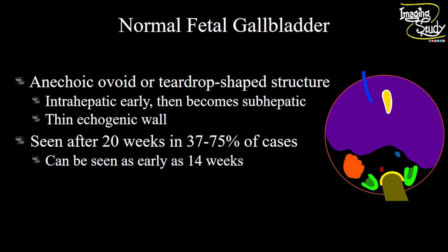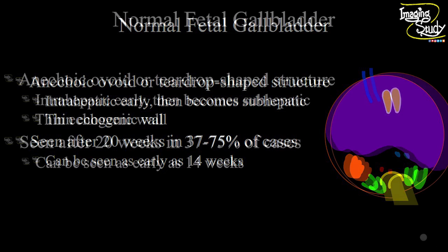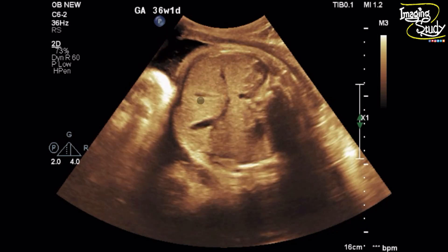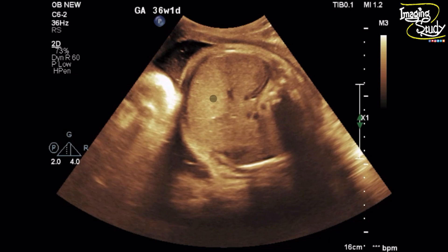Let's talk a little about the normal fetal gallbladder. It will appear as an anechoic ovoid or teardrop-shaped structure. Usually it is seen as an intrahepatic structure and becomes subhepatic in later gestational ages. It has got a thin hyperechoic wall along with an anechoic lumen. Usually we see the fetal gallbladder after 20 weeks of gestational age and it can be seen as early as around 14 weeks. Here is the picture of the gallbladder within the liver.